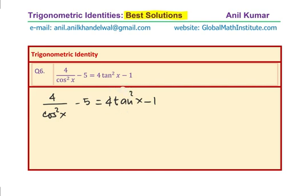The approach I have selected is solving the right hand side, writing tan square x using the identity. What is 1 plus tan square x? 1 plus tan square x is secant square x. Therefore, you can write tan square x equals secant square x minus 1.